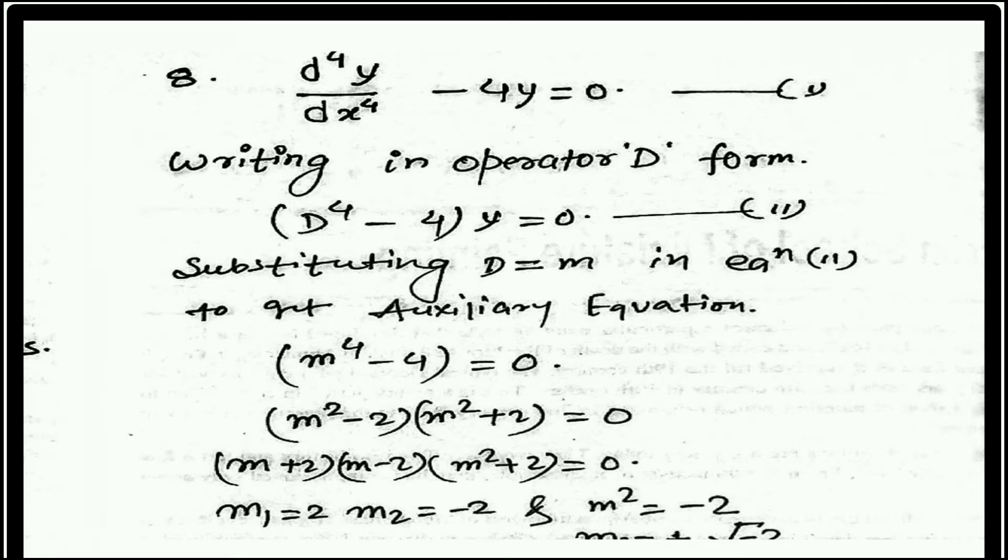Here, d⁴y/dx⁴ minus 4y equal to zero. Writing in operator D form: (D⁴ minus 4) into y equal to zero. Substituting D equal to m in equation 1 to get the auxiliary equation.